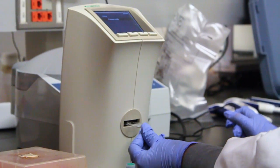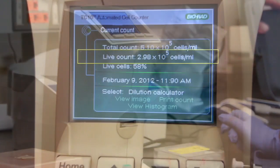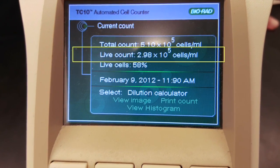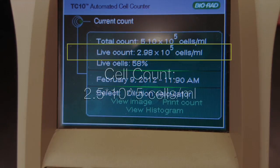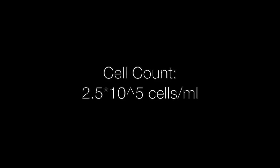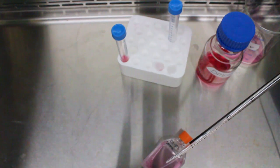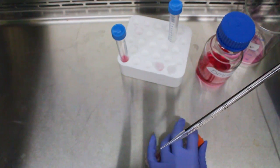Our cells revealed 2.98 times 10 to the fifth cells per milliliter, which reaches a preferred cell count of 2.5 times 10 to the fifth cells per milliliter. Therefore we will split our sample into two cryovials for preservation.